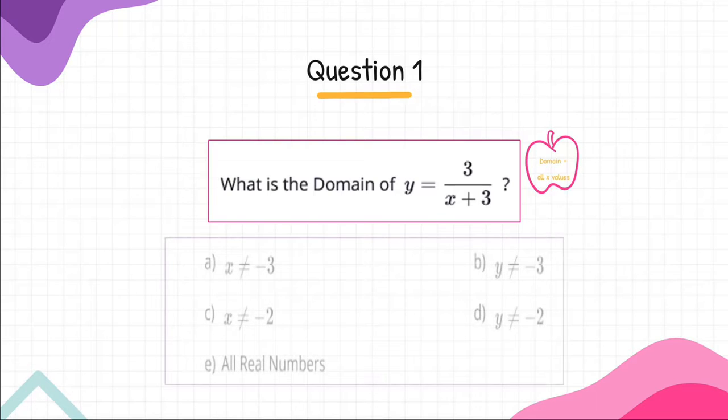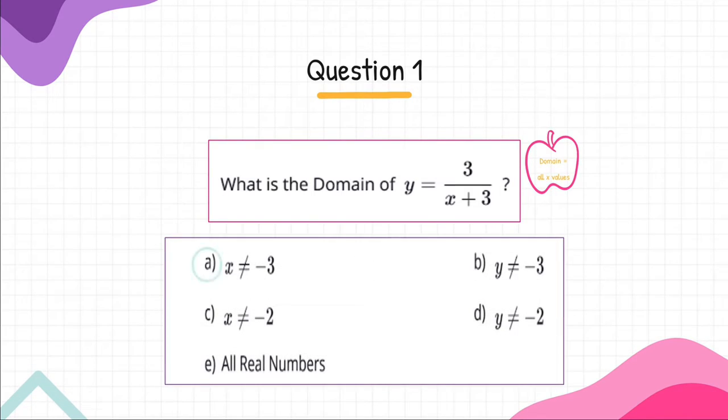The domain is all real numbers except the value that makes the denominator equal zero, which is negative 3. So the domain is all real numbers except x equals negative 3.